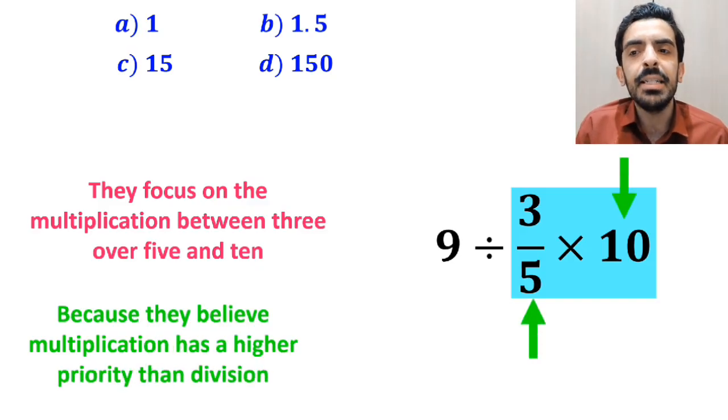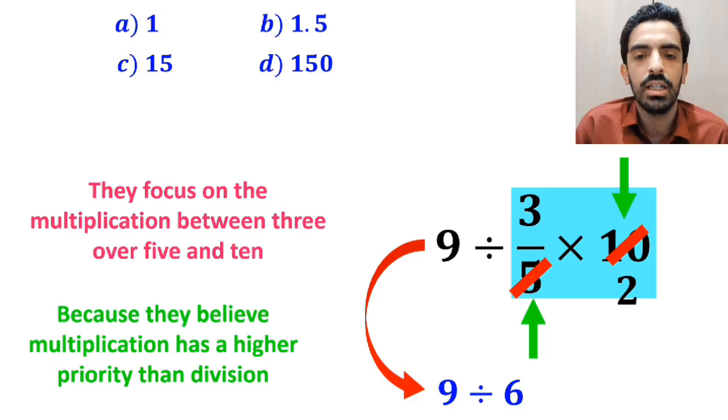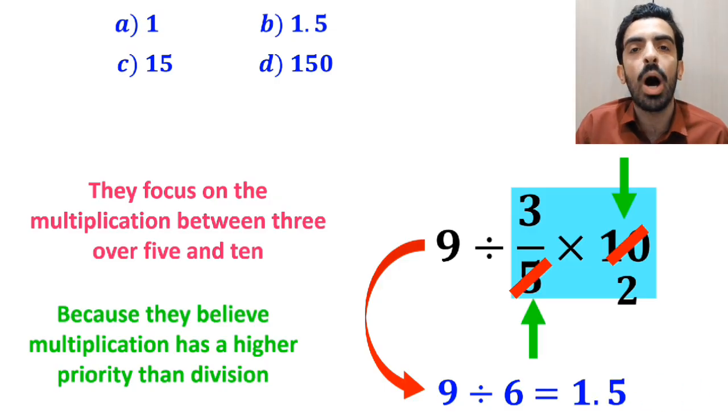As you can see in the image, they simply cancel out 10 with the 5 in the denominator, and this expression simplifies to 9 divided by 6, which finally gives them the answer 1.5.